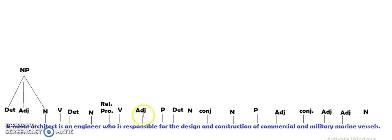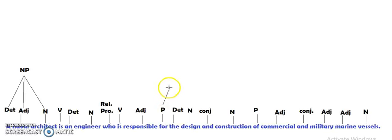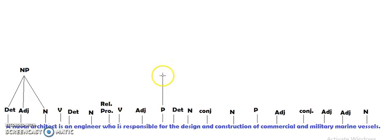So the relative pronoun and what comes after it — all of this is another sentence. We'll leave it for now and go to the preposition. For the preposition we will have a prepositional phrase. So we can do the phrases of the preposition first. The preposition — 'for the design and construction of...' — and everything that comes after it goes under the prepositional phrase. So we have the preposition coming under the prepositional phrase.